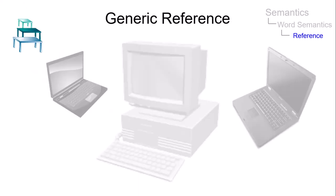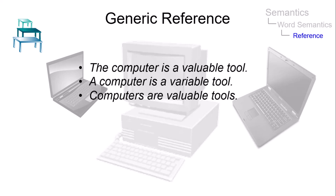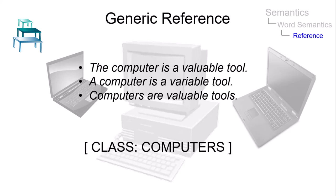There are instances where potentially referring elements such as nouns do not pick out a particular entity but refer to a class of reference. This is called generic reference. These three sentences have readings which involve generic reference; each of them states that being of great use is a general characteristic of the members of the class of computers.